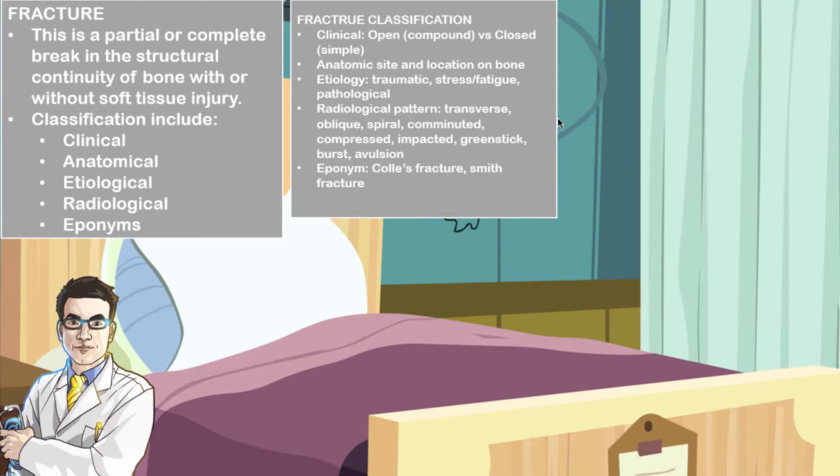In the etiological classification, this uses either traumatic fractures, which are fractures that happen in normal, non-diseased bones with severe impact. Usually the fracture happens at the site of the impact,